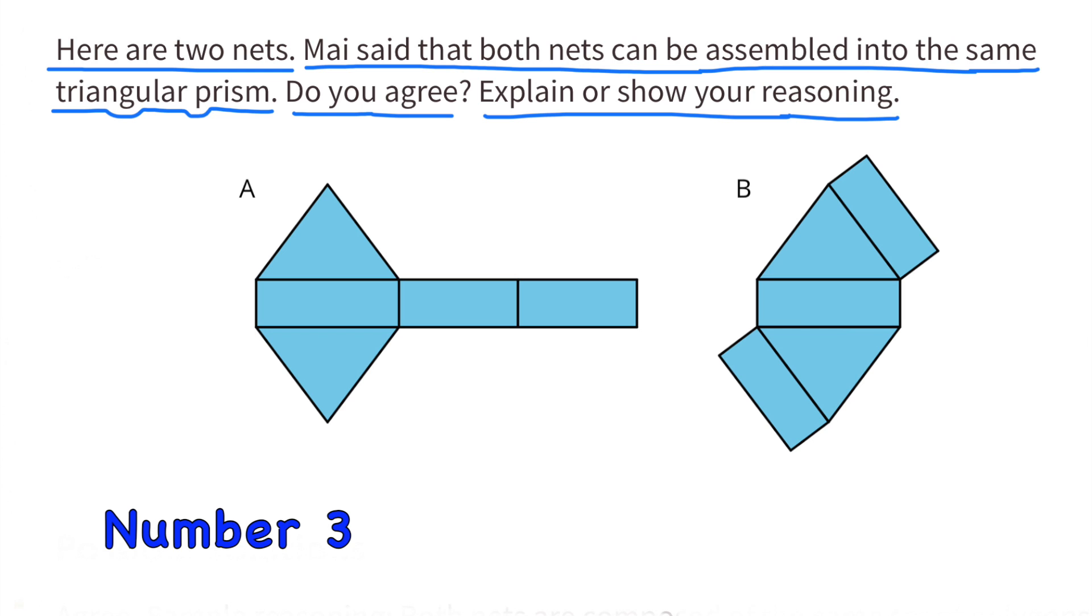Number 3. Here are two nets. Mai said that both nets can be assembled into the same triangular prism. Do you agree? Explain or show your reasoning.